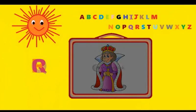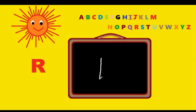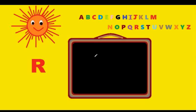Next letter is R. You have to start from the top, make a standing line, go round the corner halfway, and give it a kick. Let's watch again: come down the street, round the corner, give it a kick. That's R. R is for rainbow.